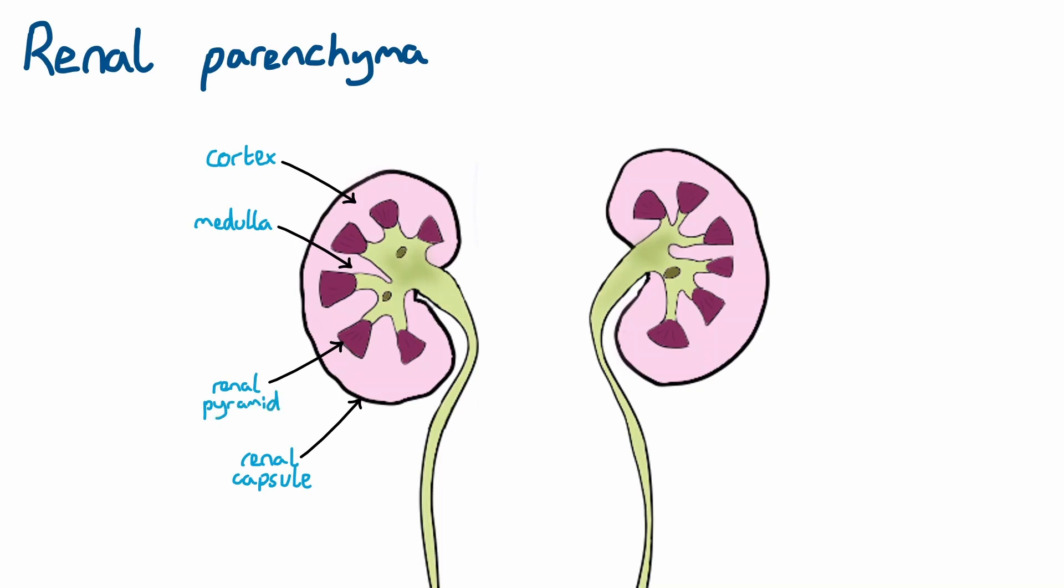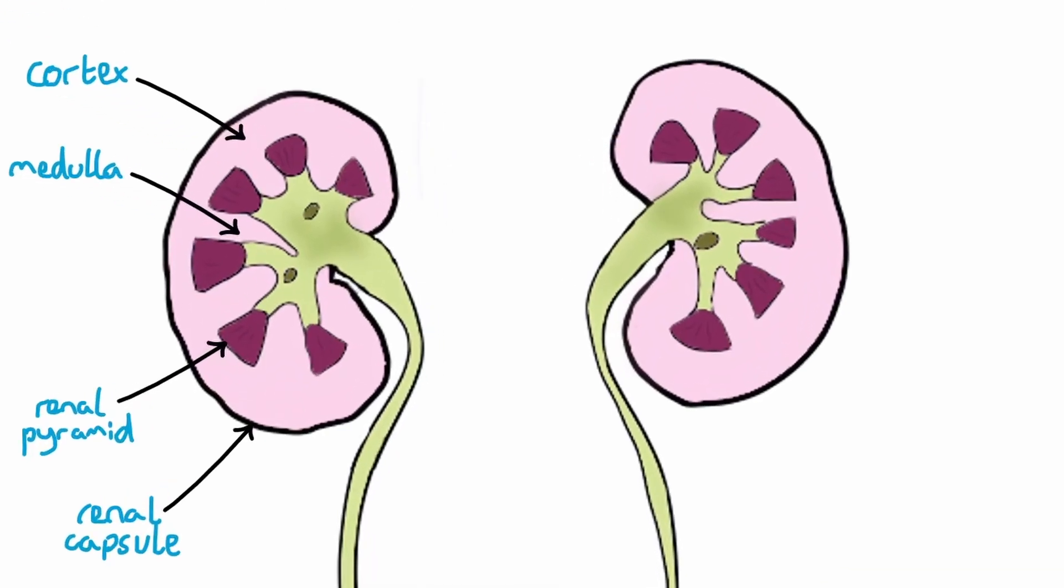The cortex projects in between renal pyramids to form columns. The tip of each pyramid is called the papilla, and this is where urine drains out of the parenchyma and into the minor calyces.